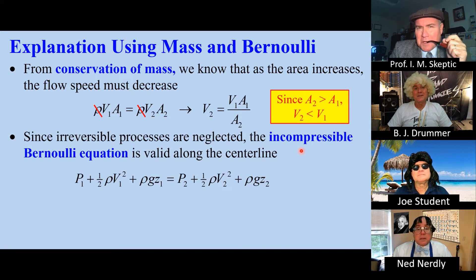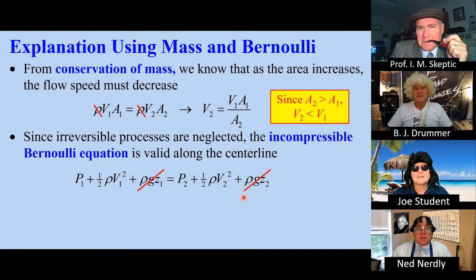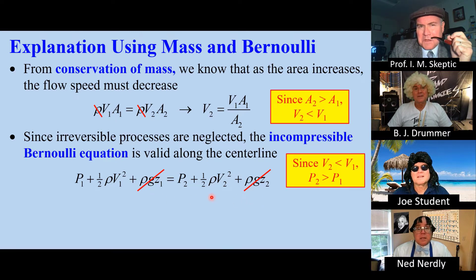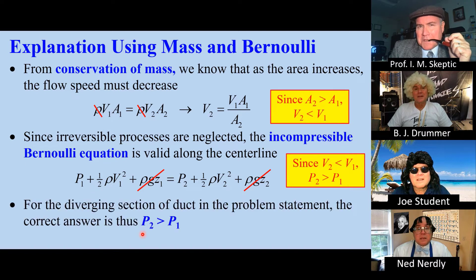Now let's apply the incompressible Bernoulli equation along the center line. This equation holds since there are no irreversibilities. There's no change of elevation along the center line, so those two terms cancel. Since V2 is less than V1, P2 must be greater than P1. So for the diverging section of duct on the exam, the correct answer is P2 is greater than P1.